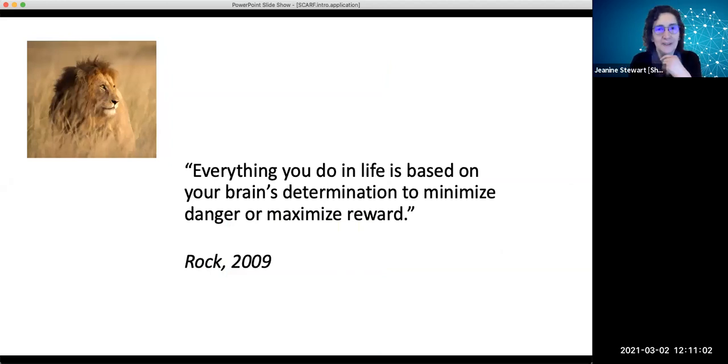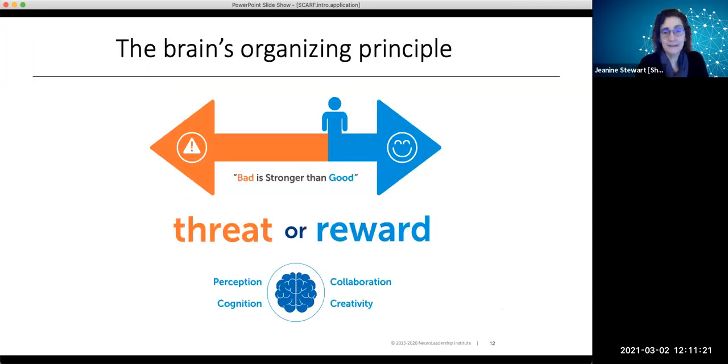So that's really ultimately the brain's primary organizing principle. Is whatever I'm moving toward going to keep me alive or is it going to challenge me in some way? Should I stay away? So we can think of it this way, and this is a quote from the Neuroleadership Institute's founder, David Rock. He says, everything you do in life is based on your brain's determination to minimize danger or maximize reward. So that primary organizing principle of keeping ourselves alive really boils down to a series throughout the day of evaluations, a go-no-go decisions, if you will. Am I going to experience more threat if I move in a certain direction or less threat or flip that to the positive or more reward?